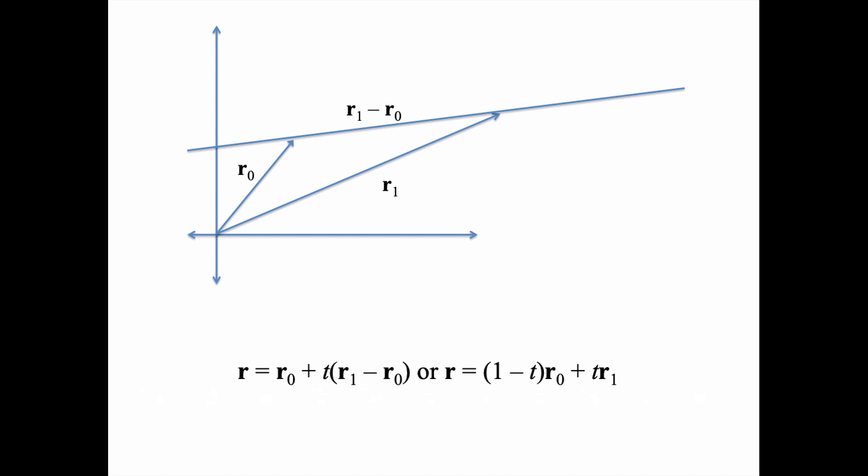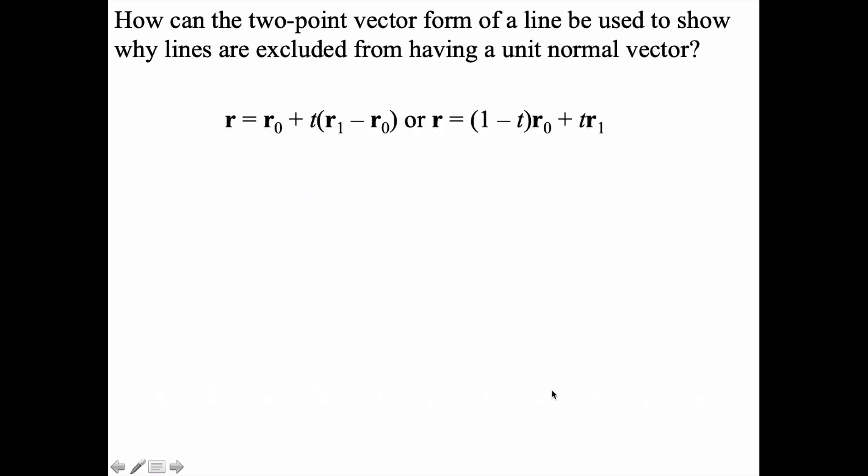The answer is yes. If you think about how we define lines in vector form, if you have two vectors r₀ and r₁ that are not equivalent, then their difference r₁ - r₀ would define a line if we scale that difference accordingly. The position vector for a line can be generalized as r₀ + t(r₁ - r₀), or written as r = (1-t)r₀ + tr₁. This is called the two-point vector form of a line, and we can use it to show computationally why lines are excluded from having a unit normal vector.